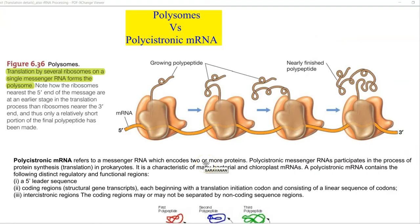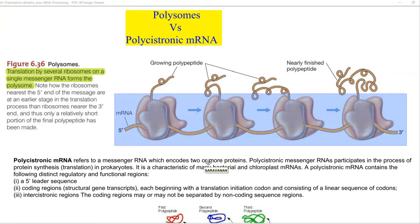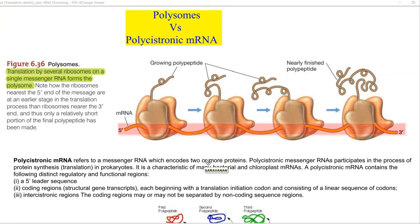We look at the differences between a polysome and a polycistronic mRNA. Polysome refers to translation carried out by several ribosomes on a single messenger RNA, and this can be best demonstrated in the right-hand side diagram.